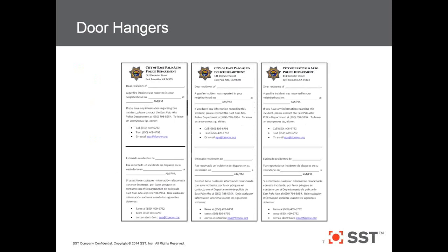This is an example of the door hanger that East Palo Alto developed. If you'd like a copy, please let me know — toward the end of the presentation, I'll have my email address on the screen. There are three door hangers on a single sheet, done to conserve paper. They printed and cut them so they could have several door hanger devices from a single sheet of paper.